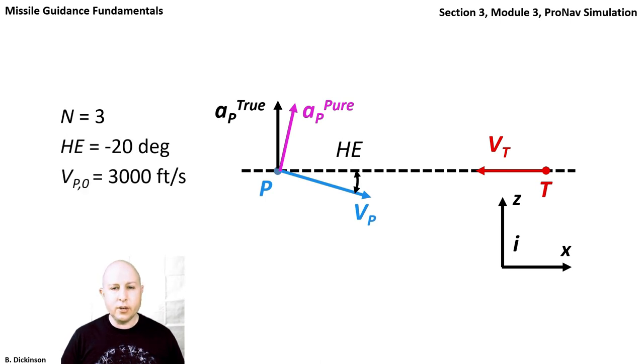The pursuer velocity is initially 3,000 feet per second. This is going to be constant in the pure ProNav sim, but for true ProNav, because AP true is not perpendicular to VM, VP will change.